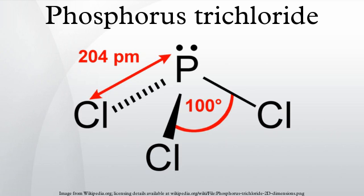PCl3 as a nucleophile: phosphorus trichloride has a lone pair and therefore can act as a Lewis base. For example, with the Lewis acid BBr3 it forms a 1:1 adduct Br3B·PCl3. Metal complexes such as Ni(PCl3)4 are known. This Lewis basicity is exploited in one useful route to organophosphorus compounds using an alkyl chloride and aluminium chloride: PCl3 + RCl + AlCl3 → RPCl3+ + AlCl4−. The RPCl3+ product can then be decomposed with water to produce an alkyl phosphonic dichloride.